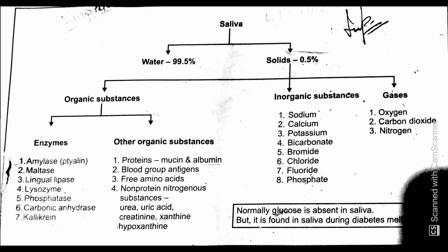So saliva is made of water and solids, and the solid is further divided into organic, inorganic, and gases. Organic is further divided into enzymes and other organic substances. Normally, glucose is absent in saliva, but it is found in saliva during diabetes mellitus. This is the composition of saliva.